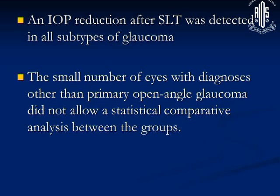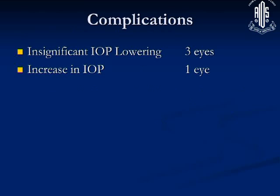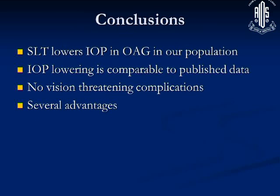IOP reduction was noted in all subgroups of glaucoma treated, the majority being POAG, and there were no significant complications. One patient had a pressure spike and in three patients there was no IOP reduction at all. To conclude: SLT lowers IOP in open-angle glaucoma in our population as well, and IOP lowering is comparable to published data — up to 30% reduction. We did not see any vision-threatening complications. SLT has several advantages over drugs, with compliance being a major issue in all populations, including ours. Thank you.